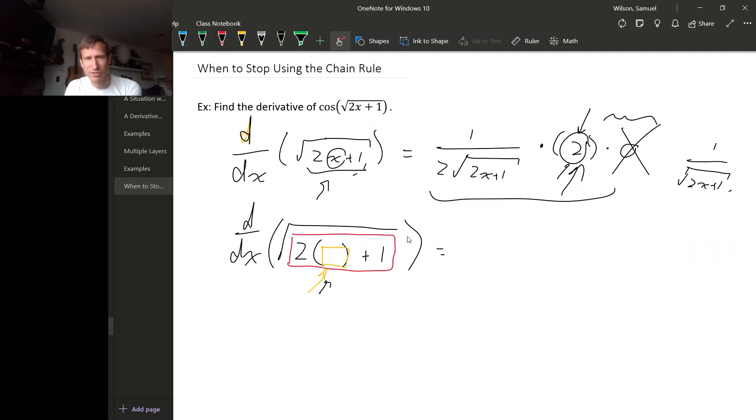So take the derivative of the outside, it's 1 over 2 square root 2x plus 1. Okay, now multiply by the derivative of the stuff inside of that, and that's this 2x plus 1. The derivative of that is 2.